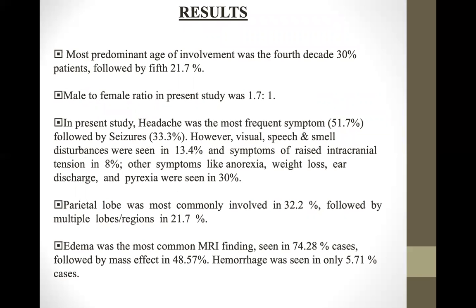Results: The most predominant age of involvement was the fourth decade, followed by the fifth decade. Male to female ratio in the present study was 1.7:1. Headache was the most frequent complaint followed by seizures. Visual, speech, and smell disturbances followed, and other symptoms of raised intracranial tension were 8%. Other symptoms like anorexia, weight loss, ear discharge, and pyrexia were also seen.